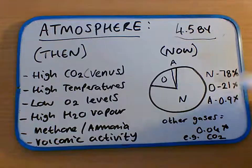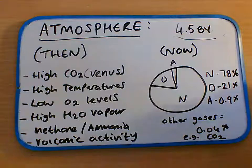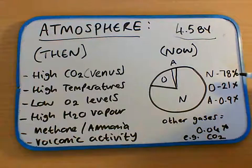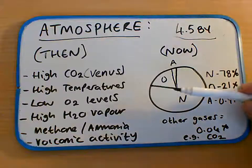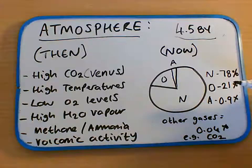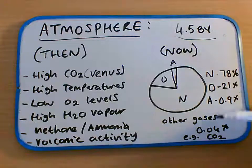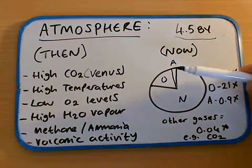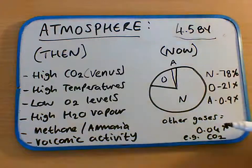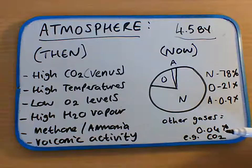So if we look at today's air, we can see the relative proportions here. It's made up of mostly nitrogen. We've got around about 21% oxygen, about 0.9% argon, and then the other gases — this tiny little line here — it's around about 0.04%, mostly carbon dioxide.